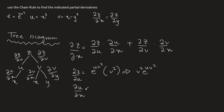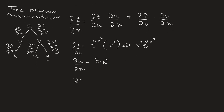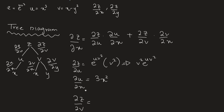Now let's find the derivative of u with respect to x. We are differentiating u with respect to x, so that gives 3x squared. Then we need to find the derivative of z with respect to v. We are differentiating z with respect to v this time. The exponential stays the same, and we multiply by the inside function's partial derivative with respect to v, which gives 2uv, so the result is 2uv times e to the power of u v squared.